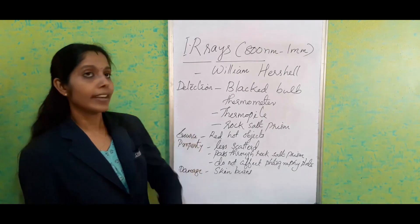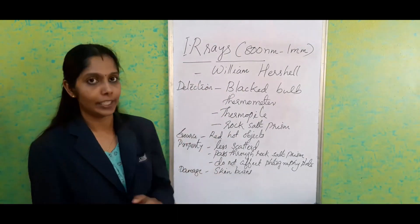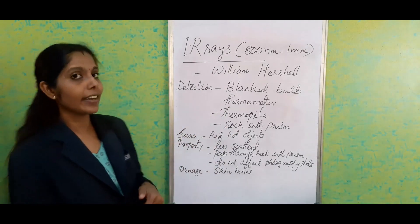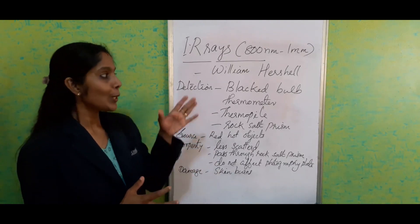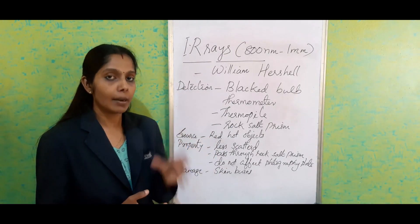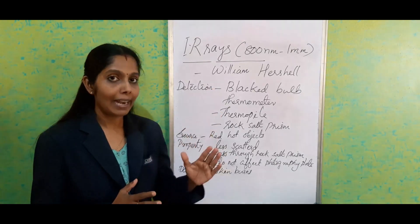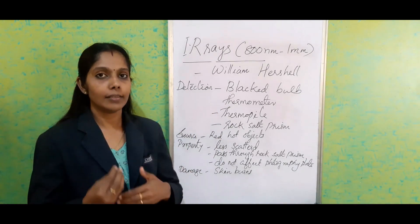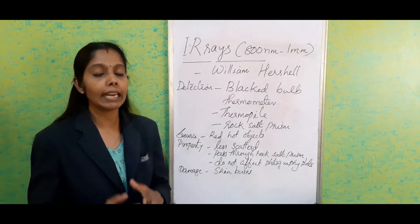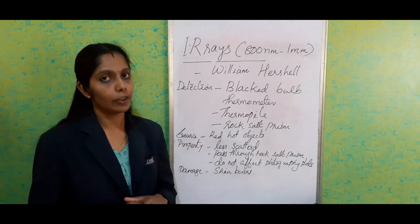Our next ray is infrared radiation, with a wavelength range from 800 nanometer to 1 millimeter, discovered by scientist William Herschel. To detect the presence of infrared radiation, we use a thermometer with a blackened bulb and move it through the electromagnetic spectrum from violet end to red end. We see a normal temperature rise, but beyond the red end there is a sudden increase in temperature, showing the presence of infrared radiation.